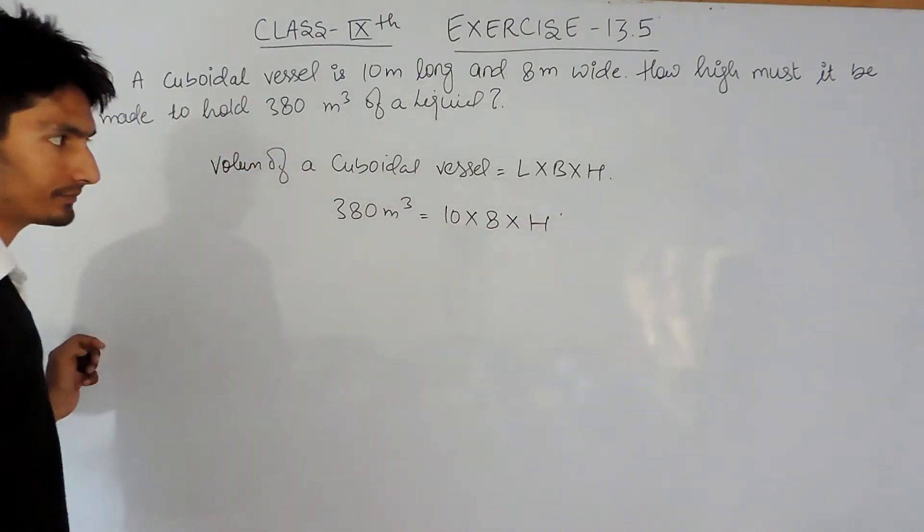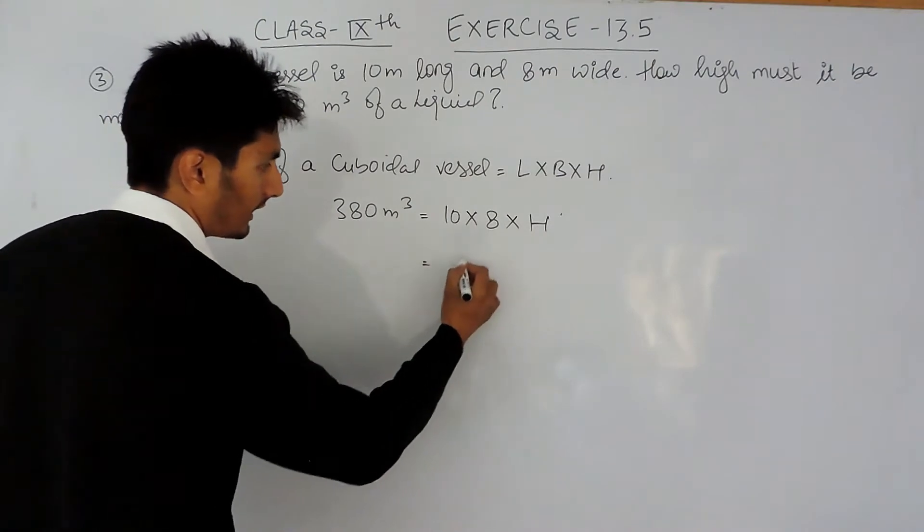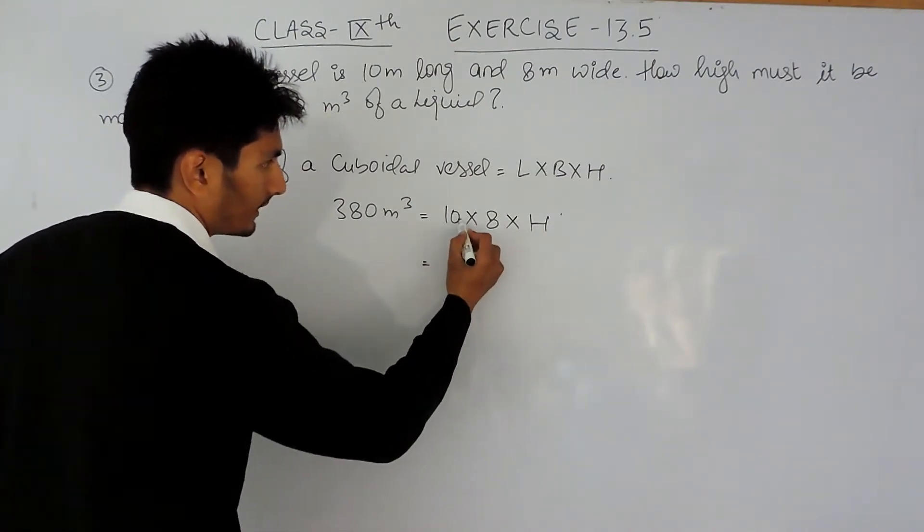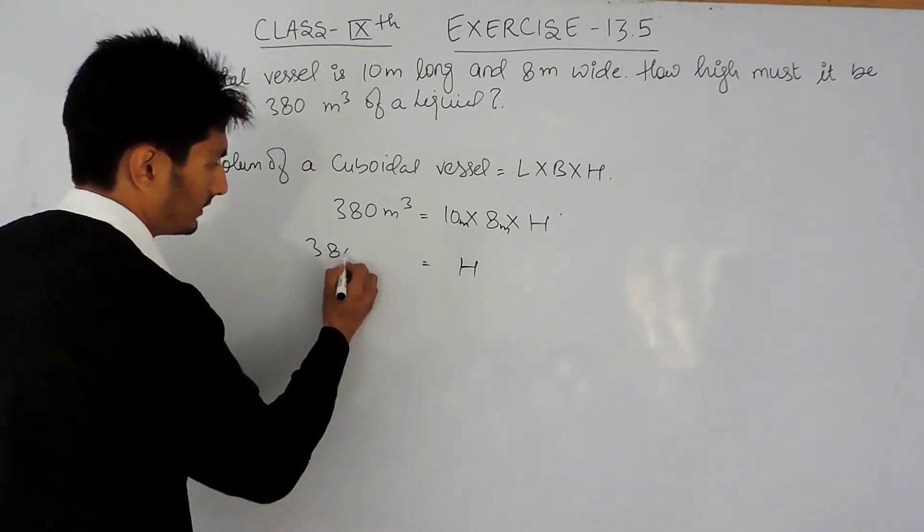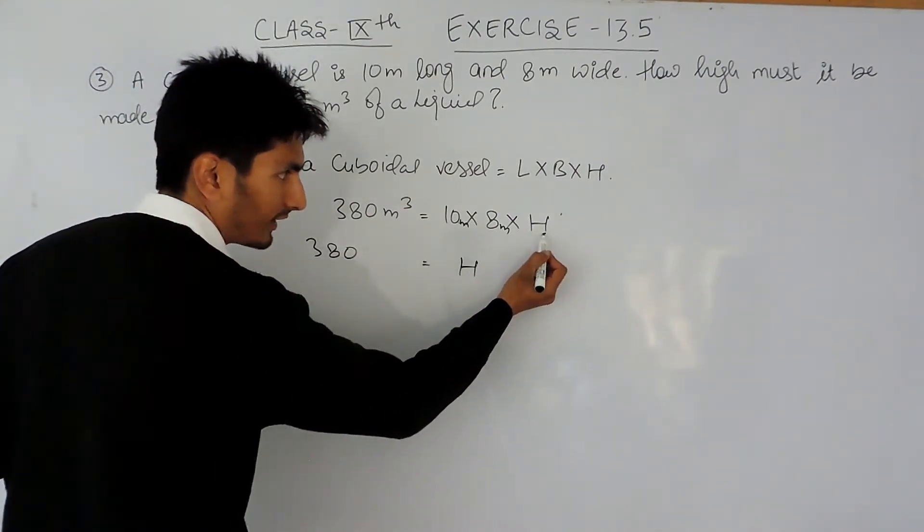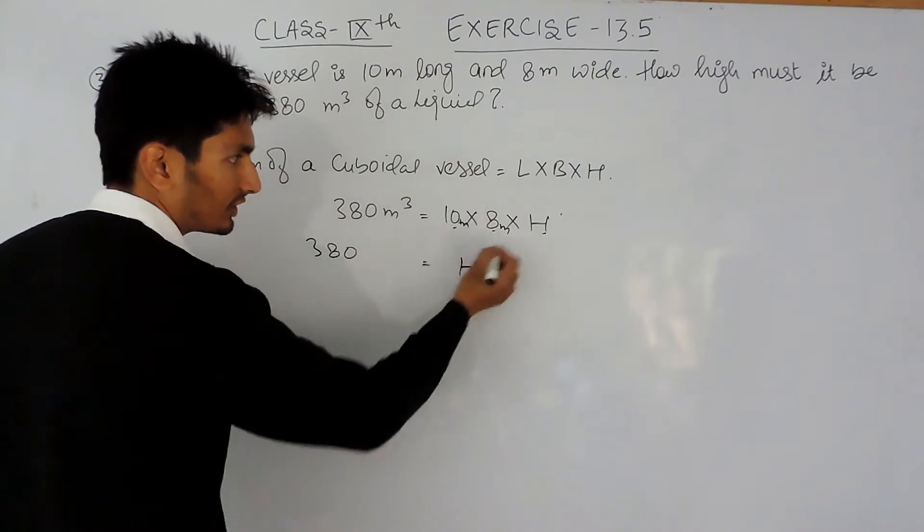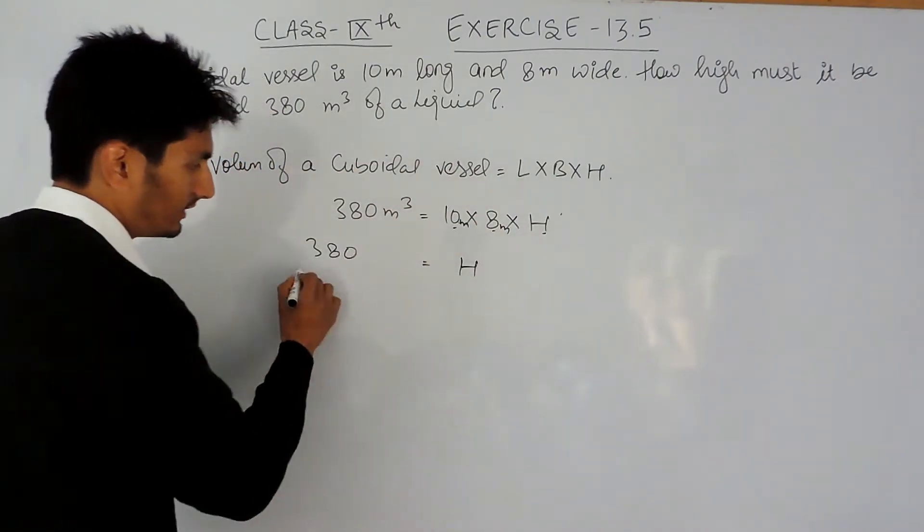Now to find the height: H = 380 ÷ (10 × 8). I have to shift the constants to the left hand side. Since they are multiplied with H, they should divide on the other side.